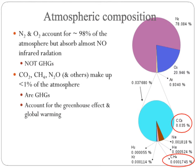Nitrogen and oxygen make up 98% of the atmosphere and absorb essentially no infrared radiation — they are not greenhouse gases. The gases carbon dioxide, methane, and nitrous oxide, and a few others, make up less than 1% of the atmosphere, but they are the greenhouse gases. They allow us to live on Earth comfortably by giving us a greenhouse effect, and as we add more of them to the atmosphere, they're also accounting for global warming.